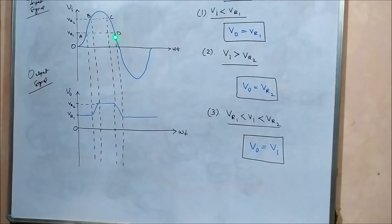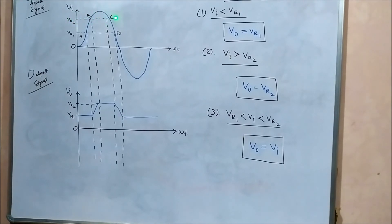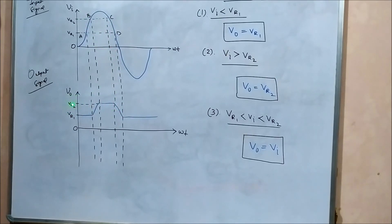For region B to C, where the input signal is greater than Vr2, this signifies case two. The input lies above the DC voltage Vr2 in region B to C, so the output voltage is constant at Vr2 throughout that region.